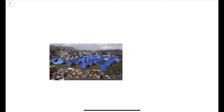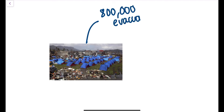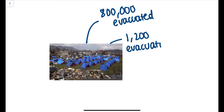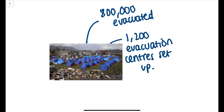Moving on to immediate responses, the authorities were able to evacuate over 800,000 people and set up 1,200 evacuation centres, as seen in the photograph. Temporary shelters such as tents were set up, and people also sought refuge in large buildings that still remained.